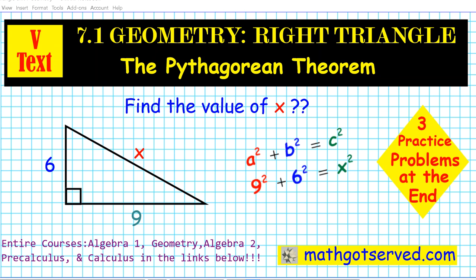Good day students, welcome to mathgotserved.com. In this clip we're going to be going over section 7.1 of our virtual geometry text on right triangles. Today we're going to be taking a look at the Pythagorean theorem. The type of problem we're going to be solving is captured in this example here, where you have a right triangle with legs 6 and 9 and you have to find the length of the hypotenuse x. We have three practice problems at the end of this presentation for you to try out in order to demonstrate mastery of the contents of this tutorial.